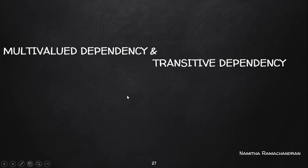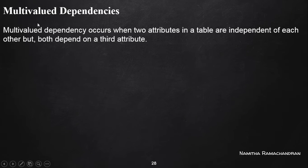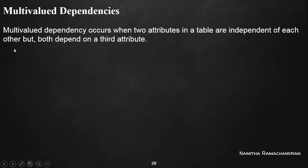Welcome back. In this video we will discuss two types of functional dependencies: multivalued dependency and transitive dependency. First, we consider multivalued dependency. Multivalued dependency occurs when at least two attributes in a table are independent of each other, but both of them are dependent on a third attribute.